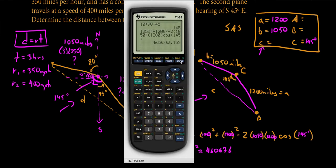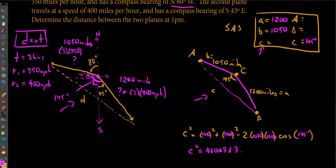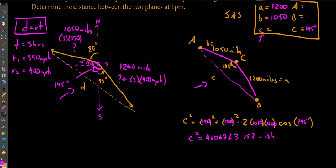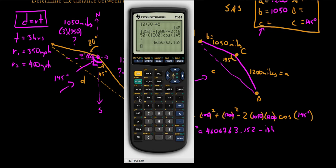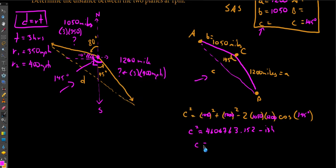So we get c squared is approximately 460,676.3. And then not forgetting that we need to take the square root of this. If you've still got it up on your calculator, we can just go ahead and hit square root of my last answer here. And so we get about 2146.33. So we're going to say c is about 2146.33.